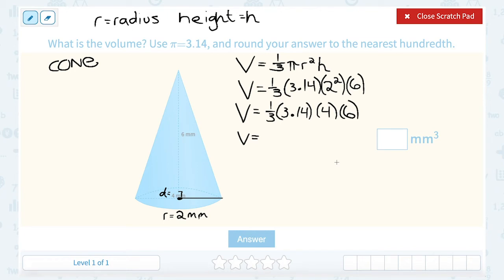And remember, multiplying by one-third is the same thing as dividing by 3. So if you prefer to multiply all the other numbers together and then divide it by 3, another way to write the same thing would be to say, okay, I'm going to multiply all my numbers together, 3.14 times 4 times 6. And then either multiplying that whole thing by one-third or another way to do that is to divide it by 3. Okay, so let's multiply 3.14 times 4 times 6. Okay, that's going to give me 75.36.